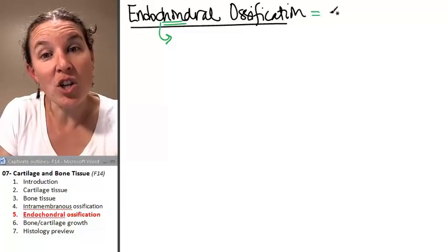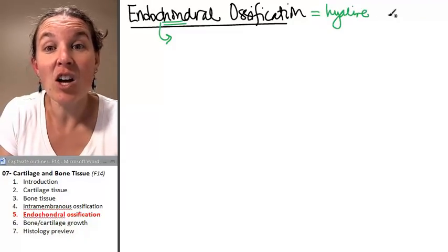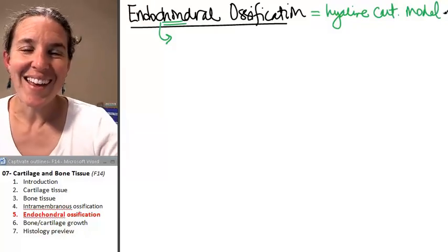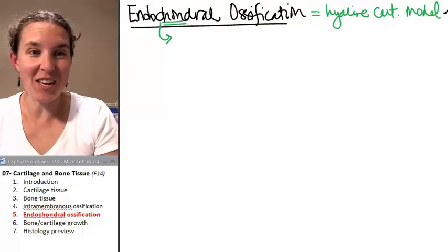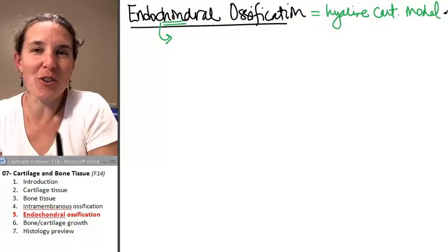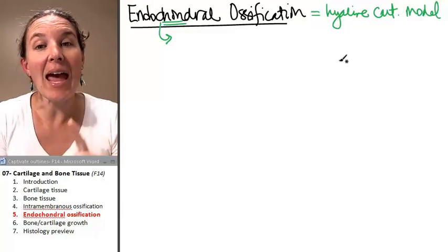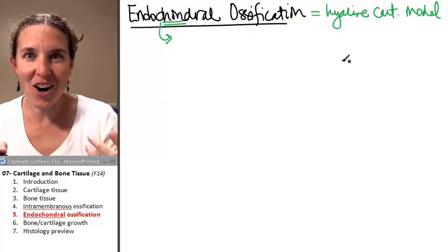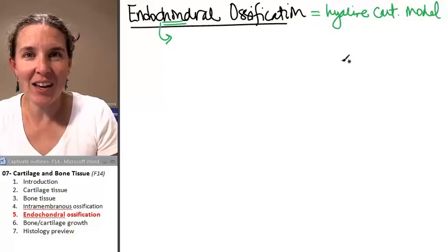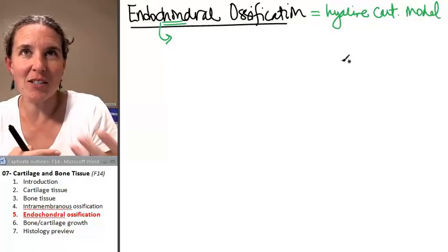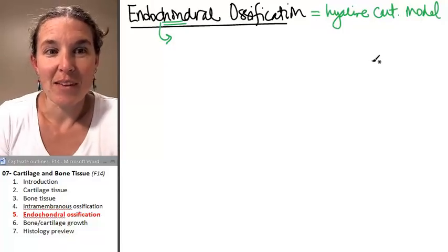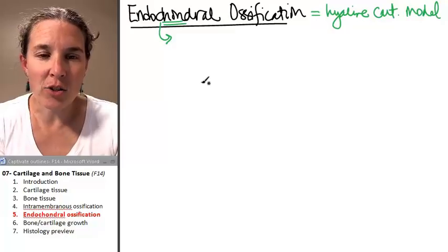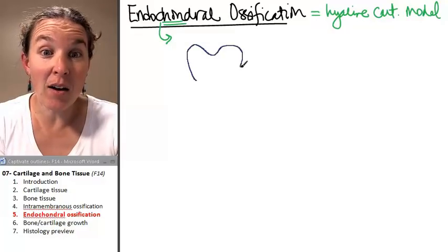Endochondral ossification starts with a hyaline cartilage model. Really? So all your long bones form through this process, like your humerus, your femur, your ulna and radius. All of your long bones — when you're a little embryo in your mama's belly, you start out with a hyaline cartilage model that looks just like a femur, or a humerus, or a tibia, except it's made out of hyaline cartilage. I'm going to draw it for you because you've got to have a drawing of your long bone.